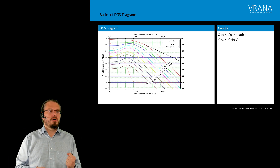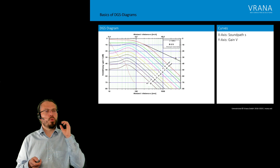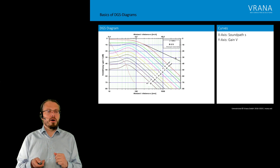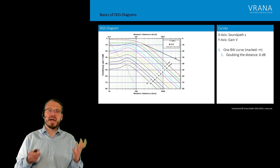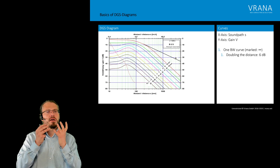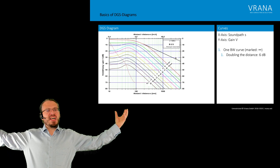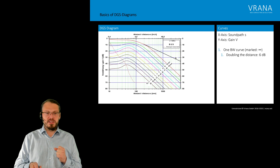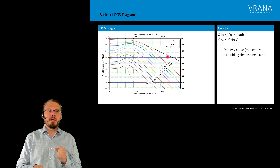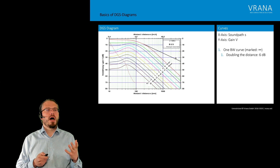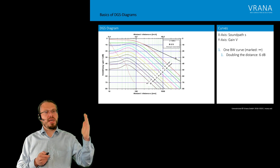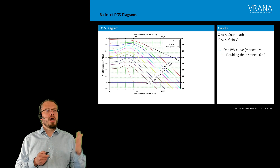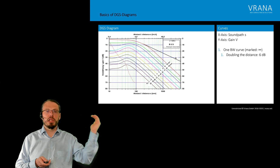On the other axis we have our gain, and we have a lot of curves in this diagram. The topmost curve is our so-called back wall curve. A back wall is an indication of infinite size, which is why this curve is marked with the infinity symbol. If we go to a sound path of 1000 mm we see about 23 dB, and at 2000 mm we see about 29 dB — a difference of 6 dB. So if we double our sound path on the back wall curve, we have to add 6 dB. That's the slope of the back wall curve.